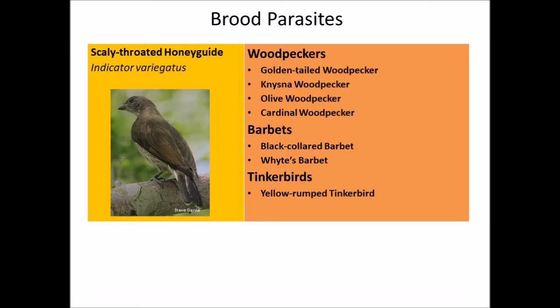The Scaly-throated Honeyguide, Indicator variegatus, hosts include once again the golden-tailed and olive woodpeckers, and additionally the cardinal woodpecker — one of the smallest woodpeckers. Barbets include the black-collared and white-eared barbets. Also the yellow-rumped tinkerbird, which is a relative of the barbets.